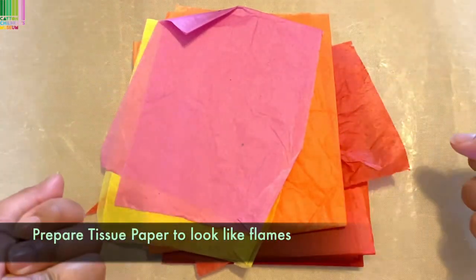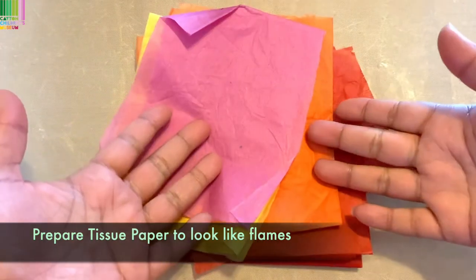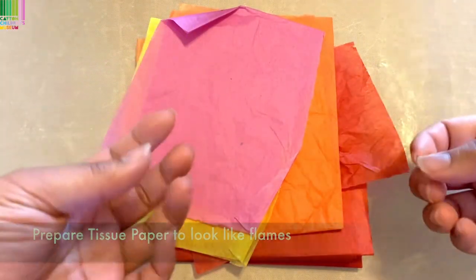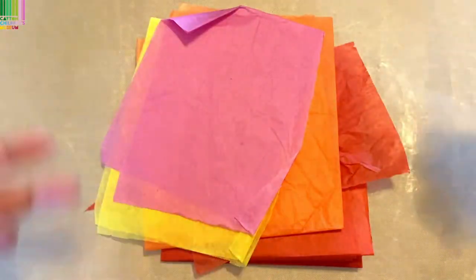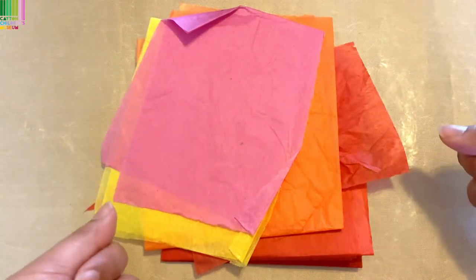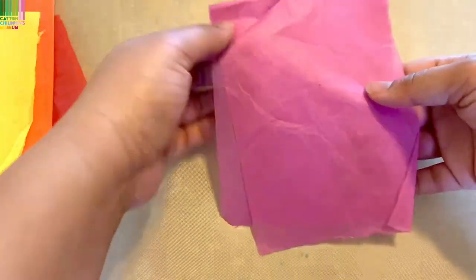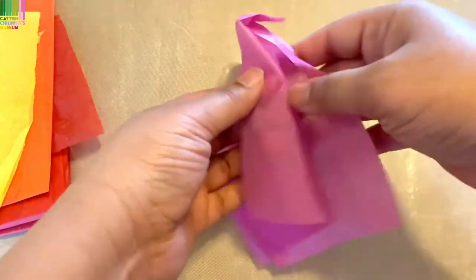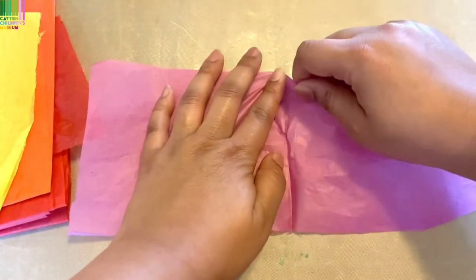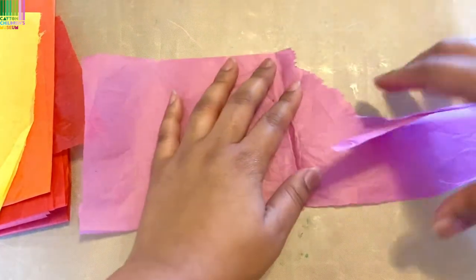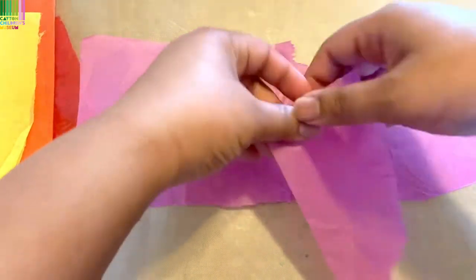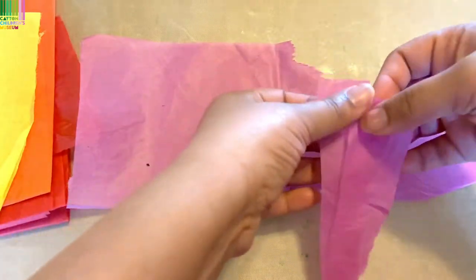And now the last thing we need to do is take our tissue paper so that we can create the flames that come out of the rocket ship. All I'm going to do is just take my paper and I'm going to just use my hands to rip it. You can also use scissors if you want, but it's usually quicker to just rip it up with your hands.